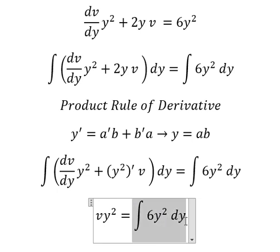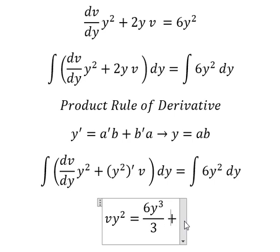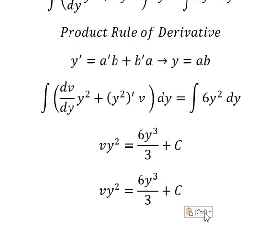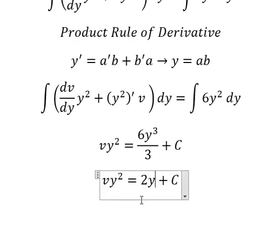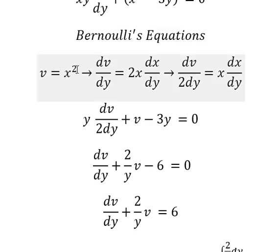This one we have 6y to the power of 3 over 3, and I will put the constant c. And now we have v, that is x squared.